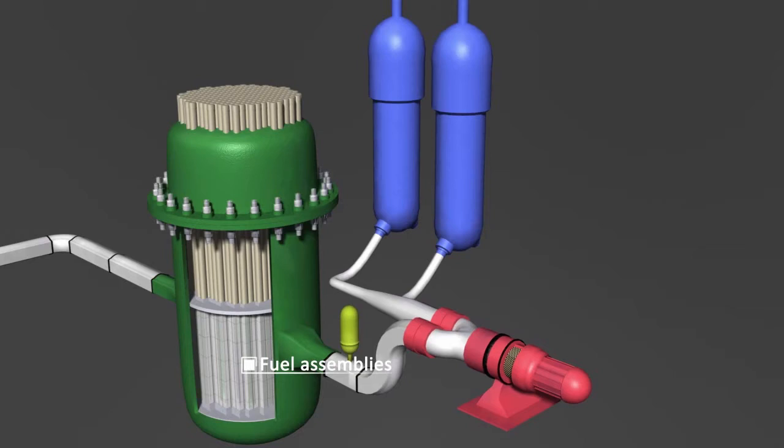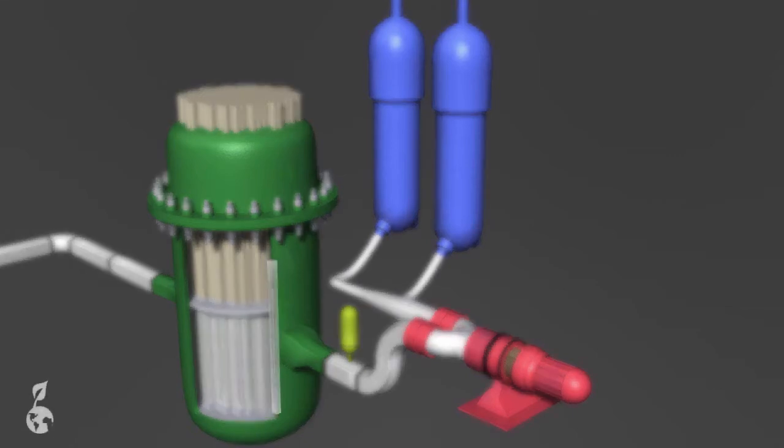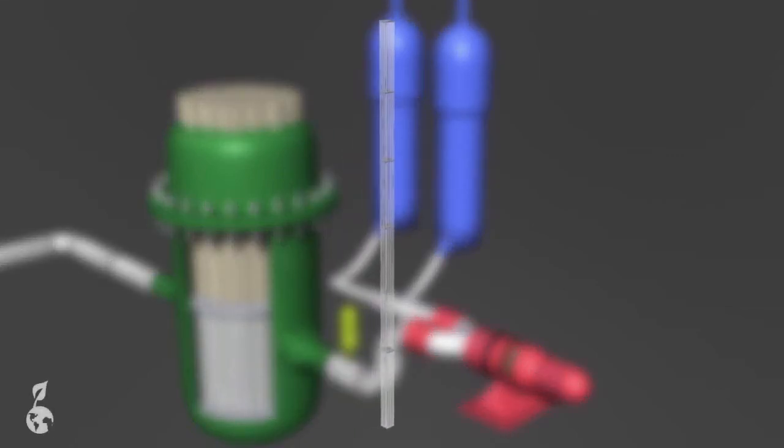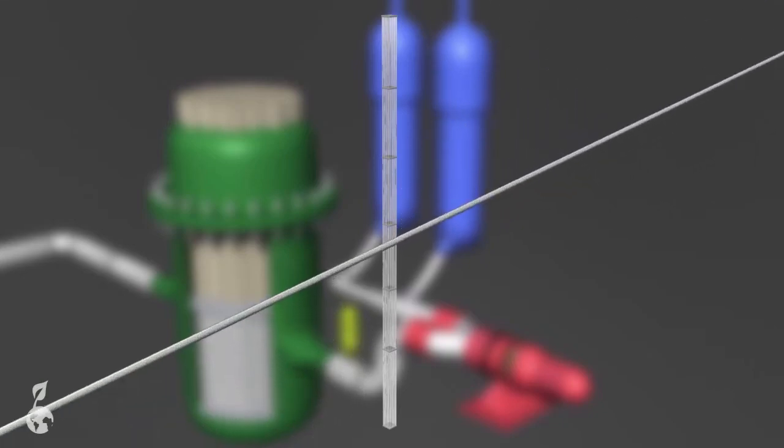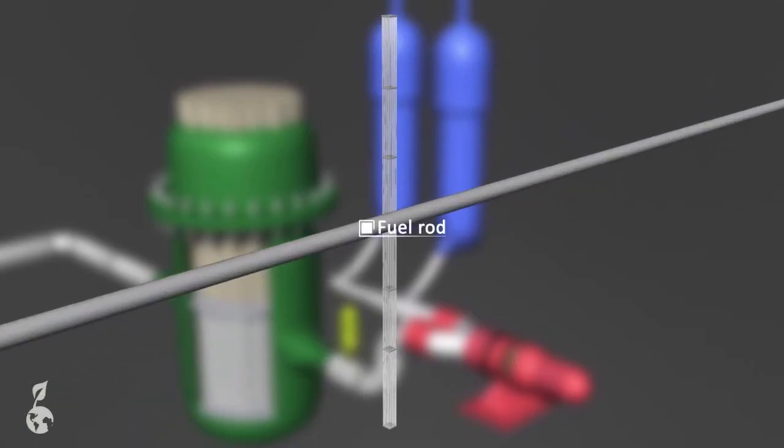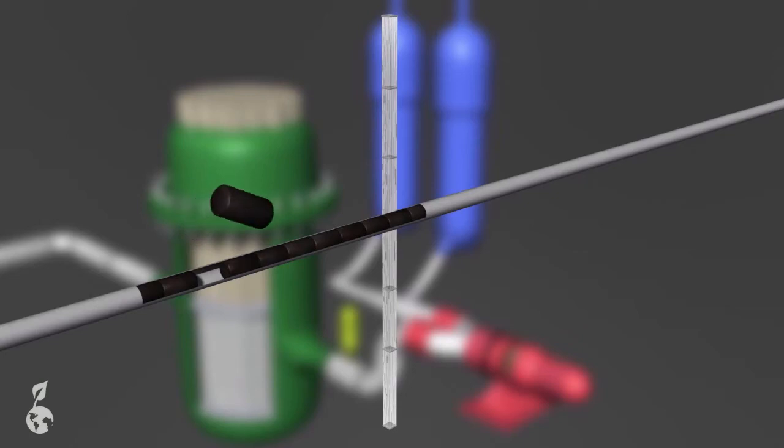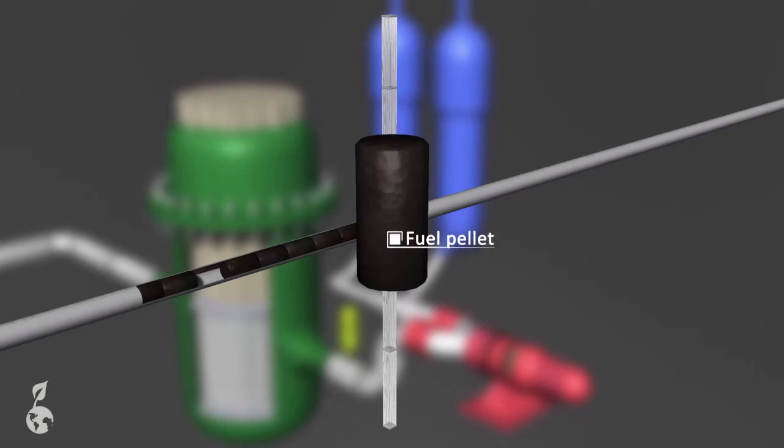Inside is where the fuel assemblies can be found. In pressurized water reactors, about 150 such assemblies are installed. A single fuel assembly is composed of many fuel rods. A fuel rod is about 5 meters in length and has a diameter of about 23 centimeters. The actual nuclear fuel is found inside of each fuel rod. Small nuclear fuel pellets, composed of enriched uranium or plutonium, make nuclear fission chain reaction possible.